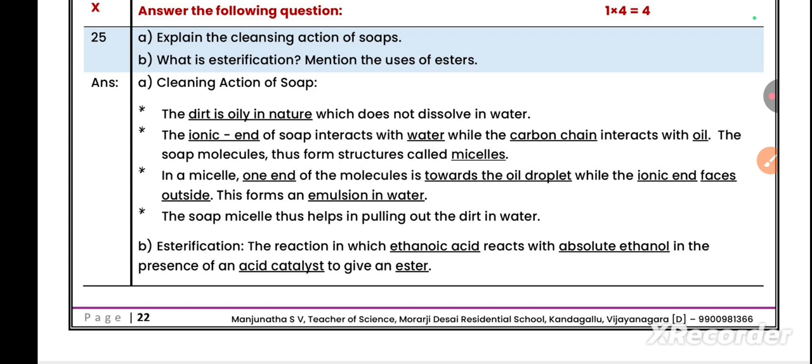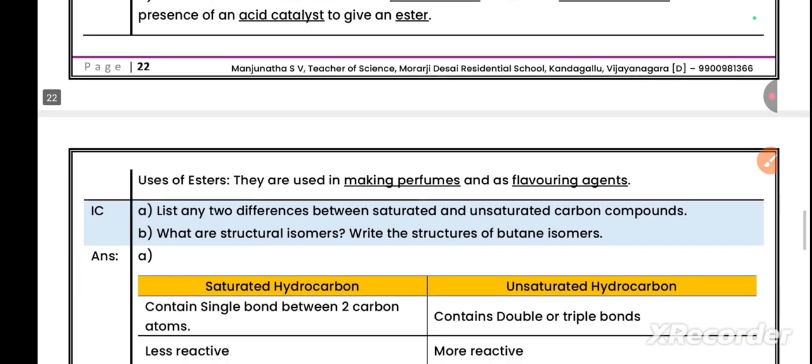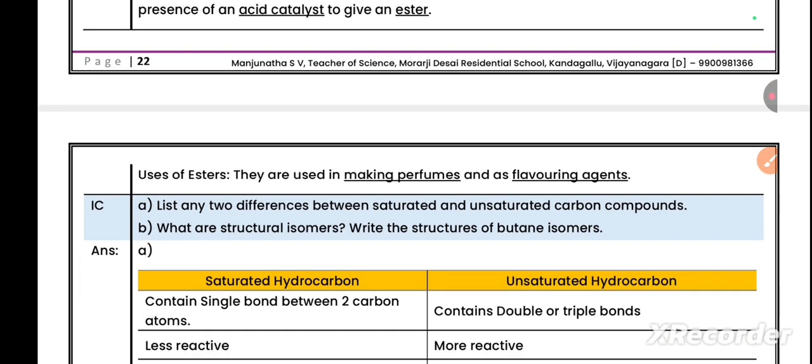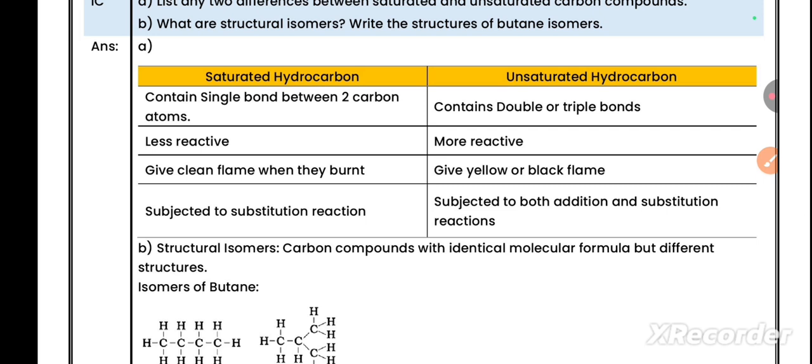Question B: What is esterification? Mention the uses of esters. Esterification: the reaction in which ethanoic acid reacts with absolute ethanol in the presence of an acid catalyst to give an ester. Uses of ester: they are used in making perfumes and flavoring agents. For this question they also asked: list any two differences between saturated and unsaturated carbon compounds. The whole syllabus differences I already discussed in the passing package. Go and check it once. Those differences are very helpful to get nearly 8 to 10 marks in your exam.